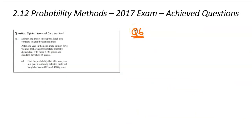Okay, we are now looking at question number six, and it's a normal distribution question. The salmon are grown in sea pens. Each pen contains several thousand salmons. After one year in the pens, male salmons have a weight that are approximately normally distributed. That would have been the giveaway in the exam to think normal distribution with a mean of 4,125 and a standard deviation of 65. We've been asked to find the probability that a randomly selected male will weigh between these years. When you're approaching this type of question, you've got to draw your normal distribution curve.